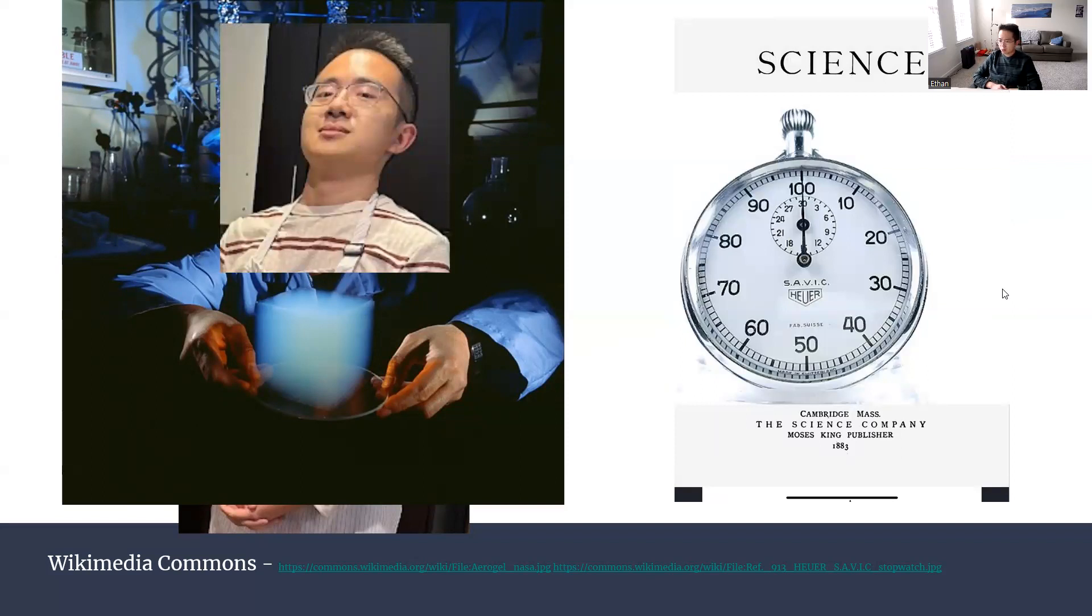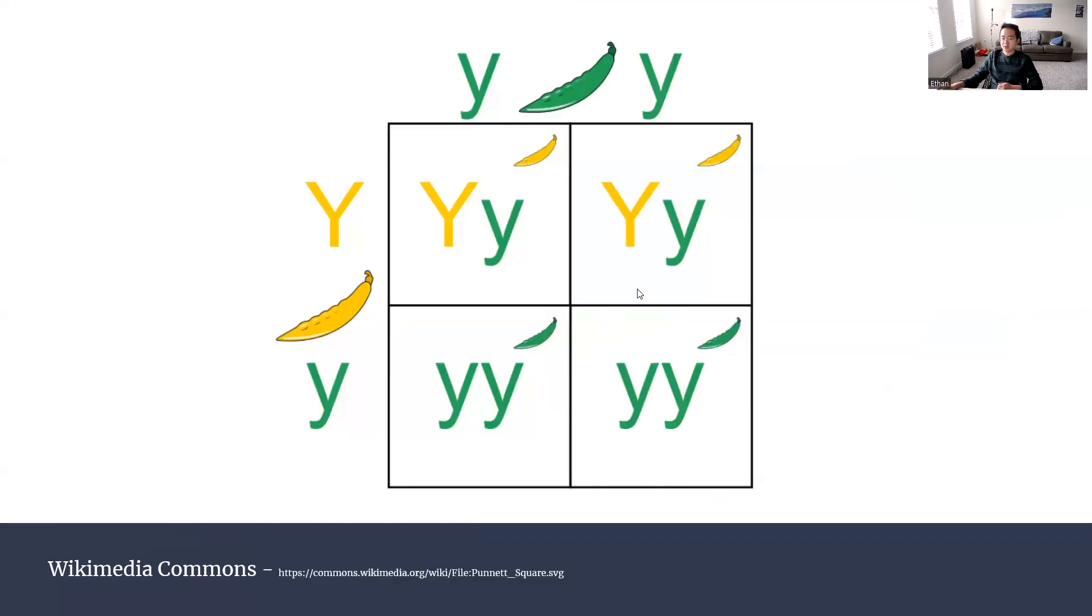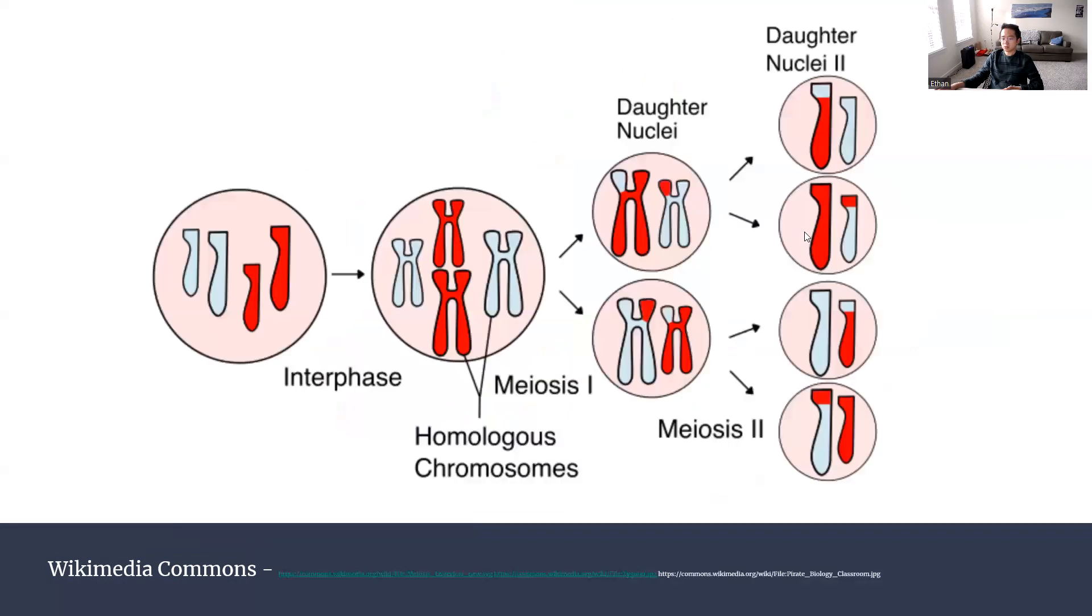So with that out of the way, before we actually talk about uniparental disomy, I want to talk about basic Mendelian genetics. Because it helps compare and contrast when we talk about uniparental disomy. In basic Mendelian genetic patterns of inheritance, each offspring inherits one allele from each parent for each specific gene in question. That's why the Punnett square exists. And the reason why this happens is meiosis.